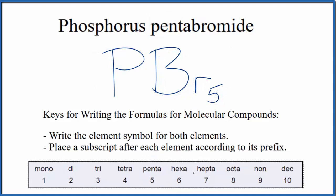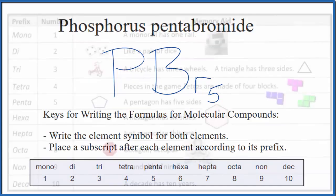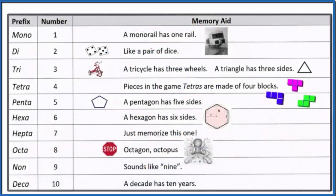If you need help memorizing these prefixes here for molecular compounds, like phosphorus pentabromide, this table might be useful. This is Dr. B with the formula for phosphorus pentabromide, PBr5. Thanks for watching.